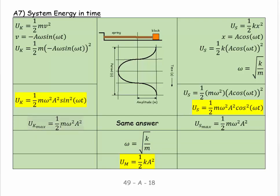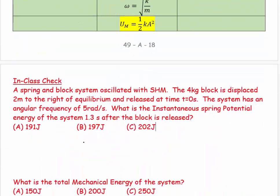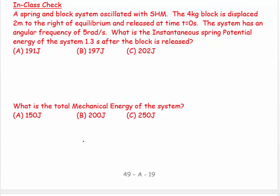The maximum value of the kinetic energy occurs when sin²(ωt) equals one, and the maximum of the spring potential when cos²(ωt) equals one. Since ω = √(k/m), the total mechanical energy works out to one-half k·A². This is consistent with what we learned in general physics — it all fits together.